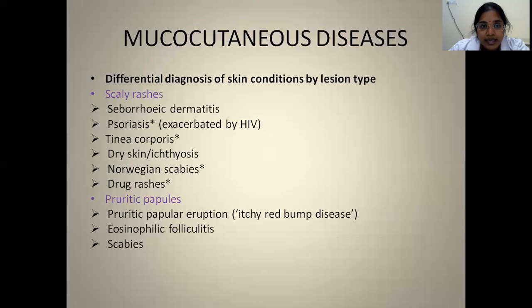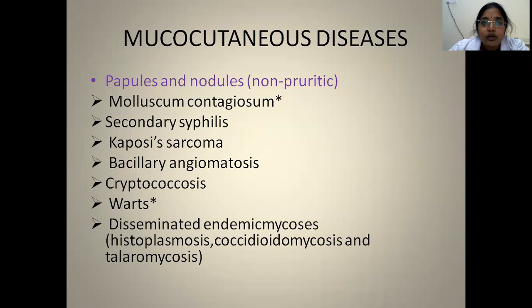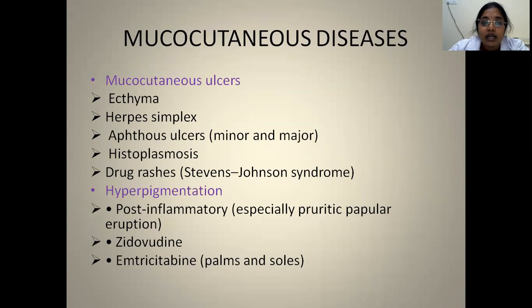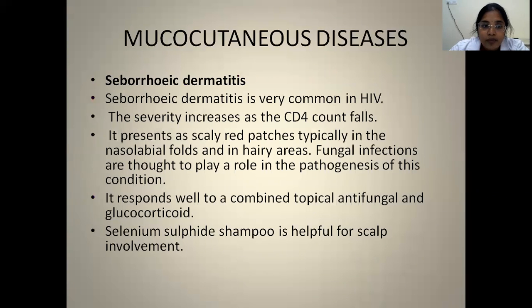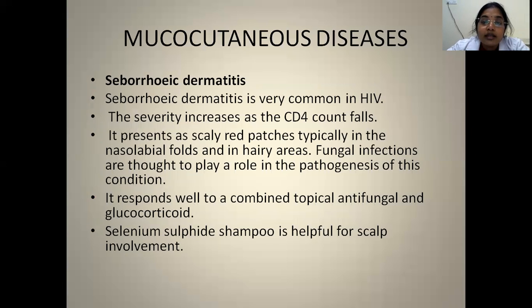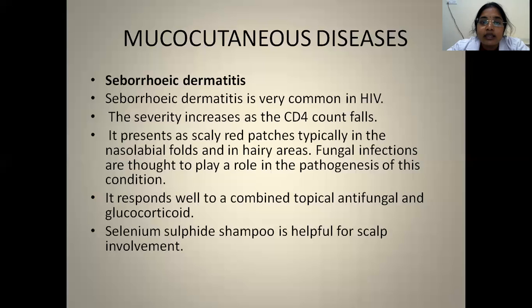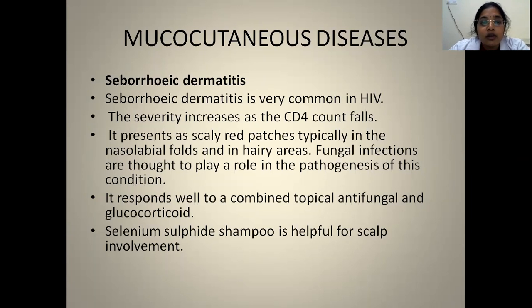Coming to manifestations in AIDS patients, they can present with several mucocutaneous diseases. Differential diagnosis of skin conditions by lesion type includes scaly rashes, pruritic papules, papules and nodules, blisters, mucocutaneous ulcers, and hyperpigmentation. Seborrheic dermatitis is a very common skin manifestation in AIDS patients. As the CD4 count drops, fungal infections play a major role in the pathogenesis. Patients present with red scaly patches over the trunk and extremities, and they respond well to antifungals and steroids. For scalp involvement, shampoos containing selenium sulphide can be used.